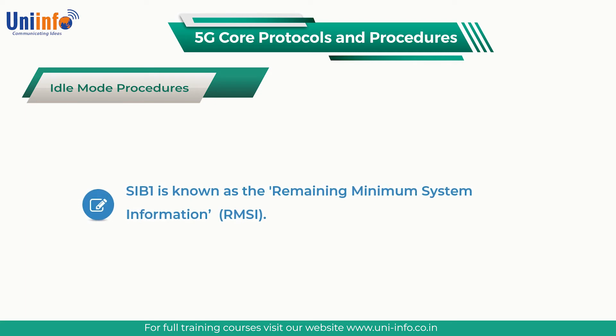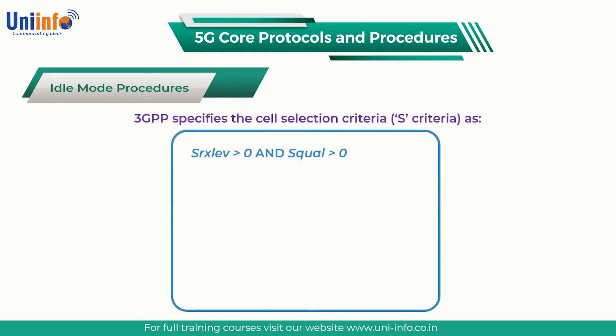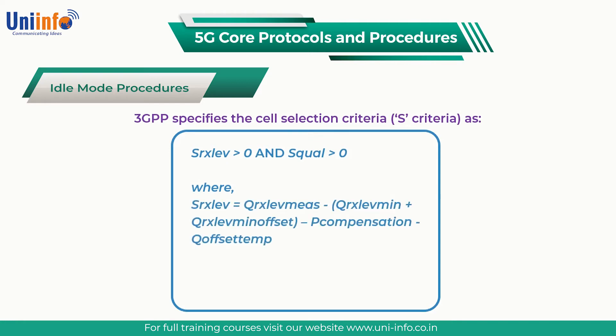SIB1 is known as the Remaining Minimum System Information. It provides a list of PLMN identities and specifies a tracking area code for each PLMN. It also provides a set of parameters which define the cell selection criteria, also known as the S criteria.